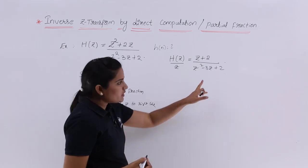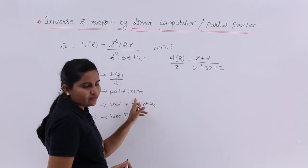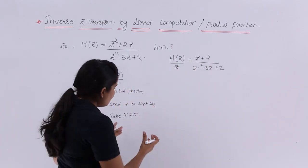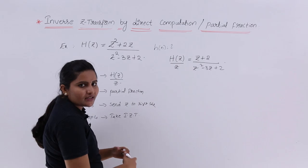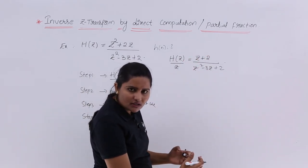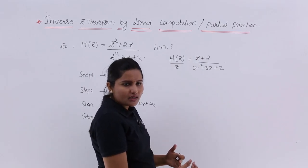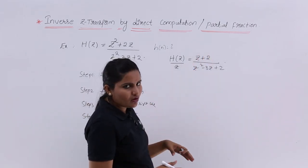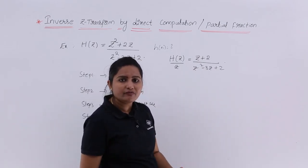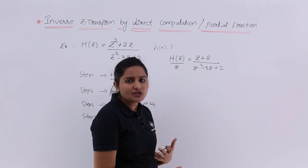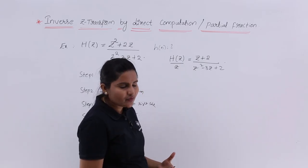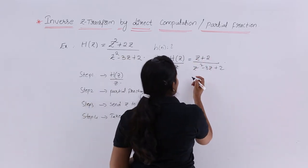Now I want to solve this in terms of partial fractions. Why? Because to apply the inverse Z-transform in the final step, we need the equation in a shortcut standard form. For example, if our equation is in the form z/(z - a) or 1/(z - a), we can easily get the inverse Z-transform. But for this combined expression, we don't have a direct form, so we solve it using partial fractions.